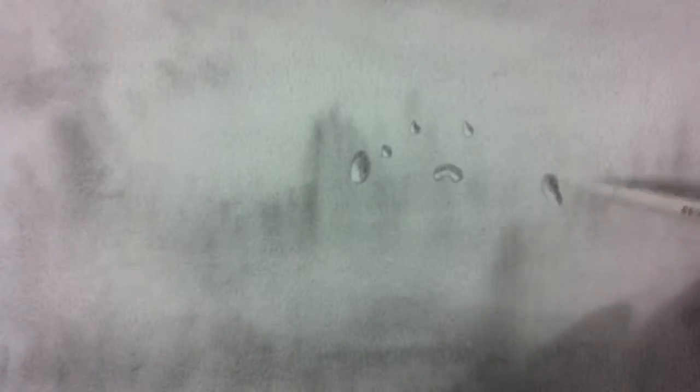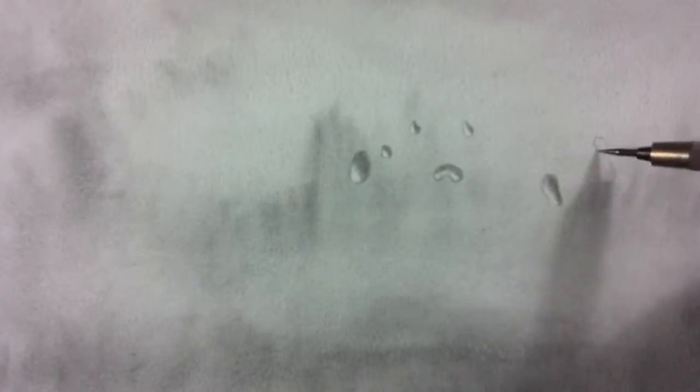We may use a stump if we want to smudge the shadows. And we continue doing this on all the surface of our window.